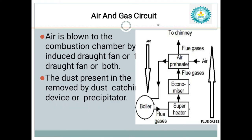The next circuit is the air and gas circuit. When coal enters the combustion chamber in the boiler, it does not ignite without oxygen. So to ignite the coal, we need oxygen. This oxygen is taken from the atmosphere with the help of a forced draft fan, and that oxygen is supplied to the combustion chamber.